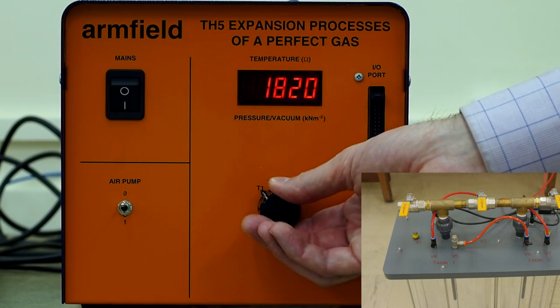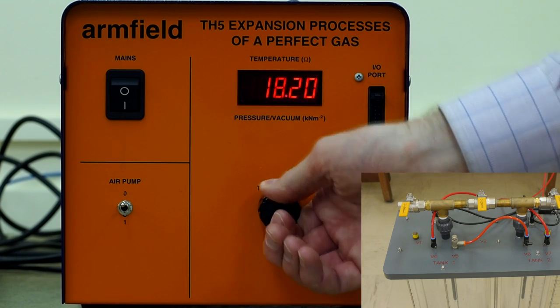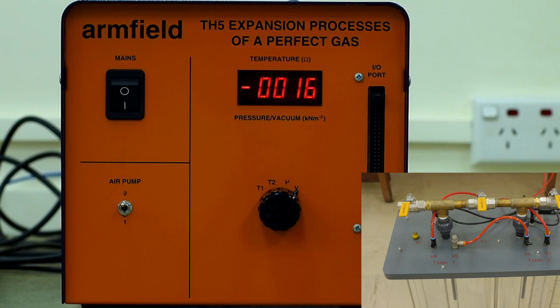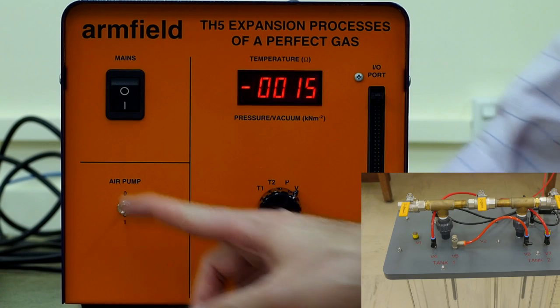On the control box, rotate the knob so that it is pointing to V, and the vacuum reading in the small cylinder is displayed. Then, turn on the pump.